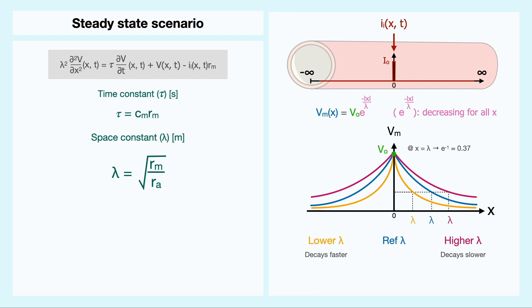One interesting observation about the space constant is what factors mostly influence its value. When we look at the equation of the constant, remember that the membrane resistance per unit length is simply the membrane resistance per unit area divided by the circumference, and the axial resistance is the resistivity divided by the area of a circle. After substitution and simplification,